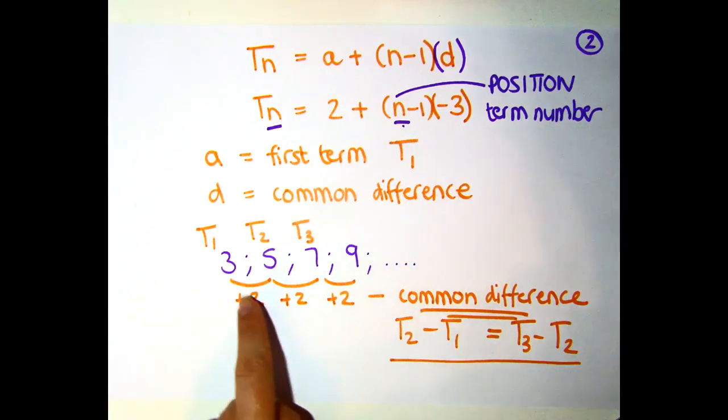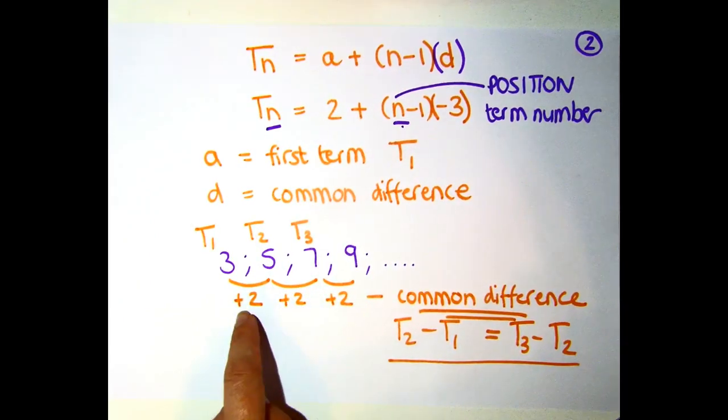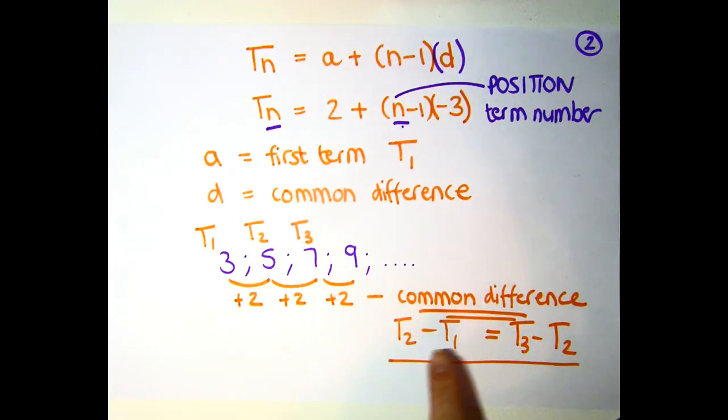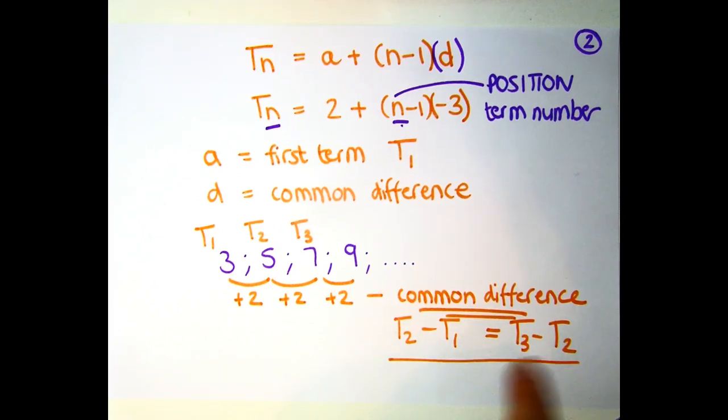You're going to get the common difference by checking that it is in fact common between each of the pairs of numbers as they go along. You can check that it's going to work by taking any term, subtracting the previous one, and checking that it is also the same difference as another term minus its previous term.